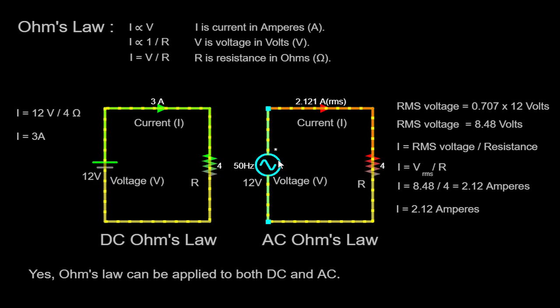While the voltage and current waveforms constantly change, we can still analyze the circuit using the RMS (root mean square) values, which represent the effective values of the alternating current or voltage. For a sinusoidal waveform, the RMS value is approximately 0.707 times the peak value.